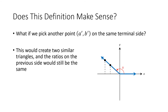Let's think about whether it matters if we pick a different point. What we're going to see is that if we did pick a different point, we would just get two similar triangles, and the ratios in those two similar triangles would be equal because of properties of similar triangles. So it turns out this is a good definition — it doesn't matter which point you pick.